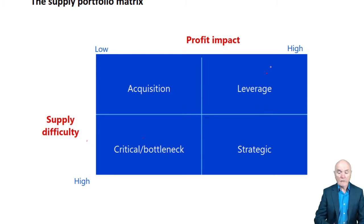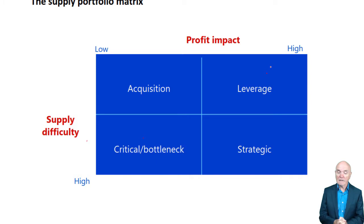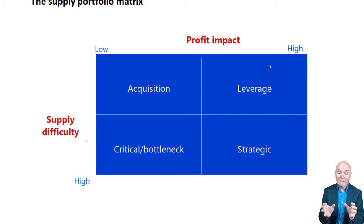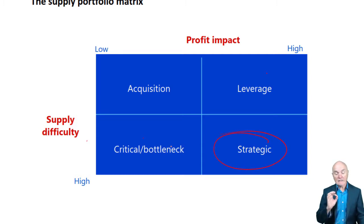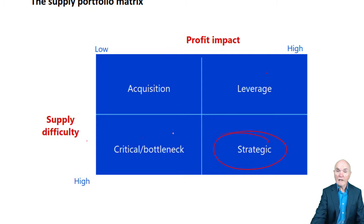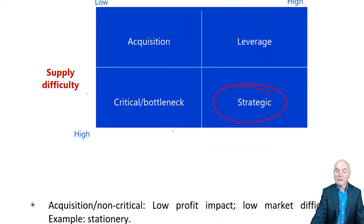Over here where it is leverage — high profit impact, low supply difficulty — let's work at it. If supply difficulty is low it implies there are many suppliers; we could play one off against the other and get a really good deal that could have a big impact on our profit. And here — high profit impact, high supply difficulty — we have to be really careful indeed. This is where our procurement managers will be putting an awful lot of effort to make sure our supplies are suitable.